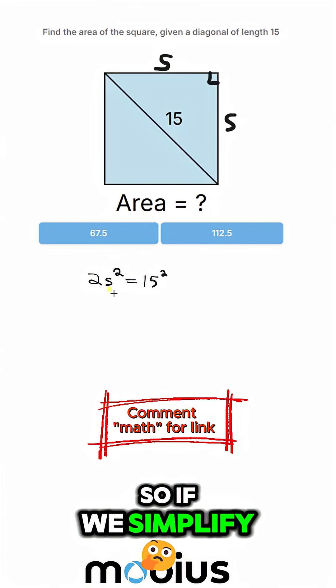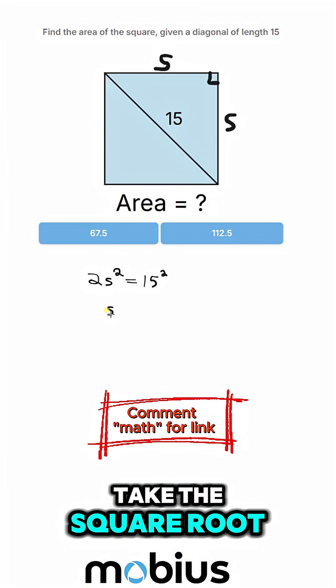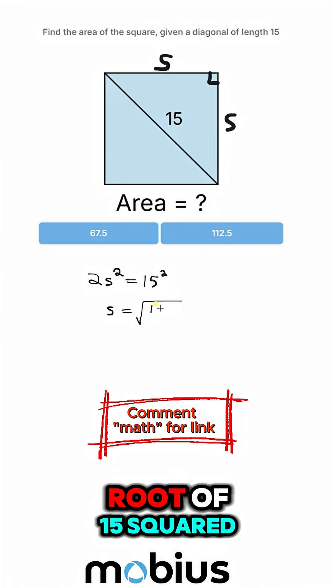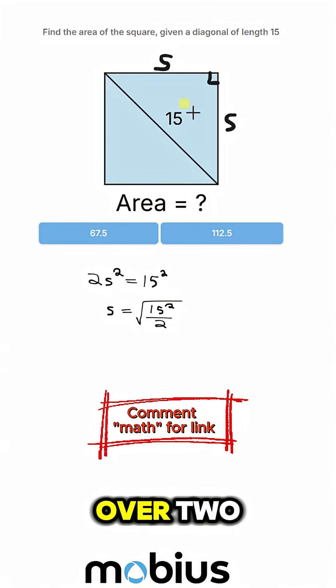So if we simplify that, divide both sides by 2, take the square root, S equals the square root of 15 squared over 2.